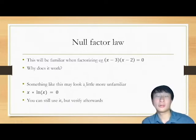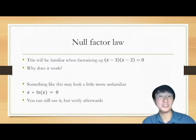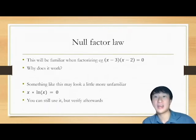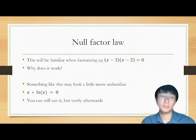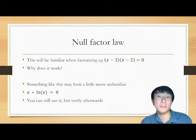Sometimes it might look a little bit more unfamiliar, but it still works the same way. x times ln x is equal to 0 means that x is equal to 0, or ln x is equal to 0. Also, verify afterwards that it does work, because in this case, x actually can't be 0.